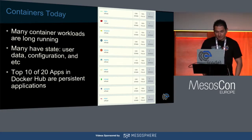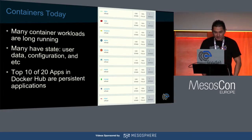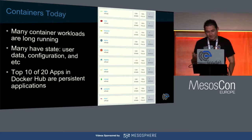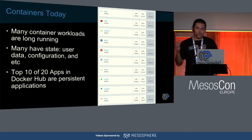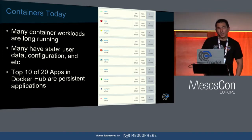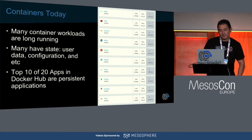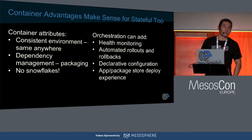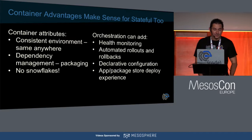Some examples of those persistent apps are Redis, MySQL, Mongo, Postgres, and Docker registry itself. There are a lot of applications out there that require persistence, and it's becoming more and more prevalent in the container space today. You might ask yourself: why do we care that we can deploy stateful applications inside containers?